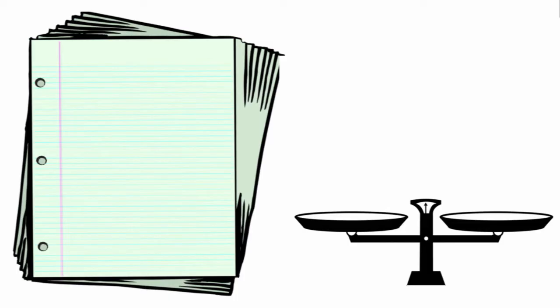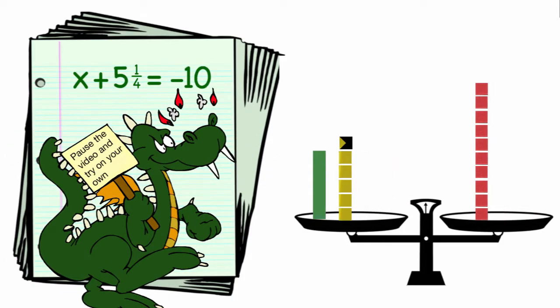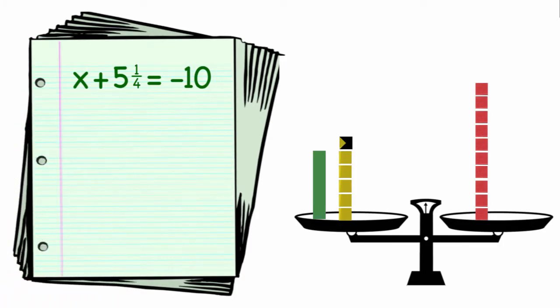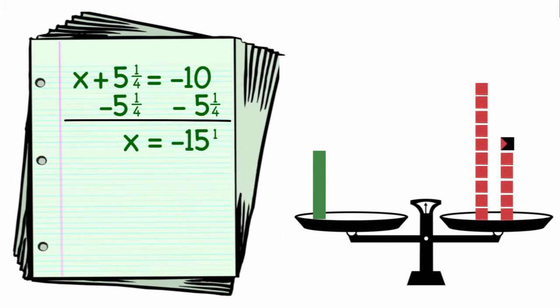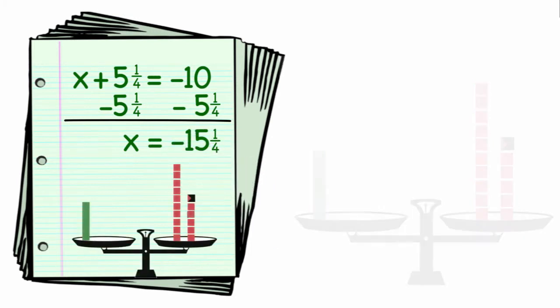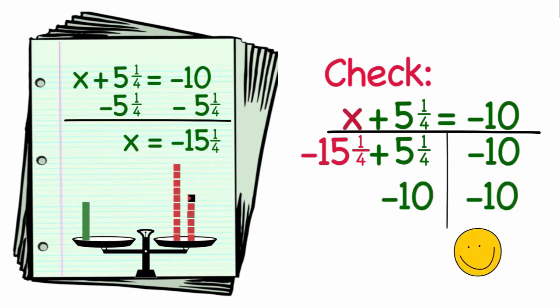So let's try a few problems. x plus 5 and a quarter equals negative 10. Pause the video and try the problem on your own. Then unpause the video and we'll go over it together. We want to get the x by itself. So we need to add negative 5 and a quarter to both sides of the equation. And that would leave us with x is equal to negative 15 and a quarter. It's always a good habit to check your answers. So we will substitute negative 15 and a quarter in for x. Since negative 15 and a quarter plus 5 and a quarter is negative 10, our problem checks.